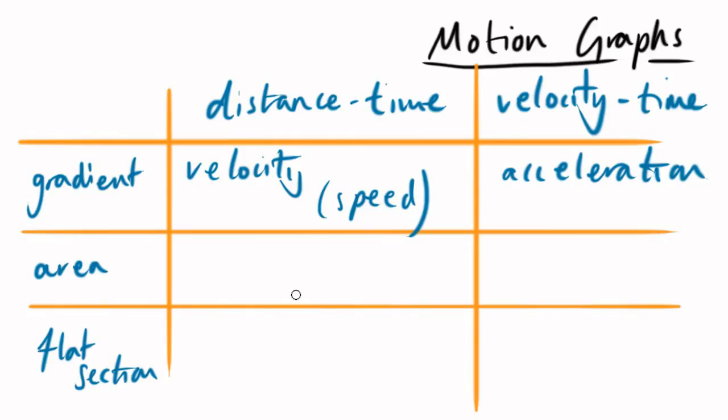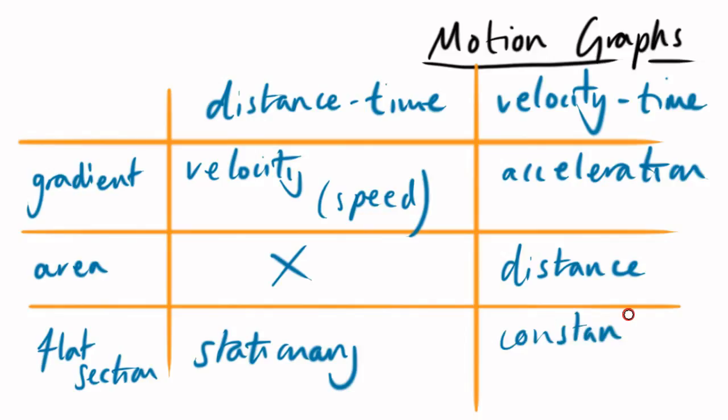Distance time graph, you could work out the area, but you shouldn't, because it doesn't actually mean anything at this point. The velocity time graph, you can work out an area, and that represents the distance the object has travelled. And lastly, what does a flat section represent? A distance time graph, it represents that the object isn't moving, it's stationary. And what does a flat section represent on a velocity time graph? That represents a constant velocity.